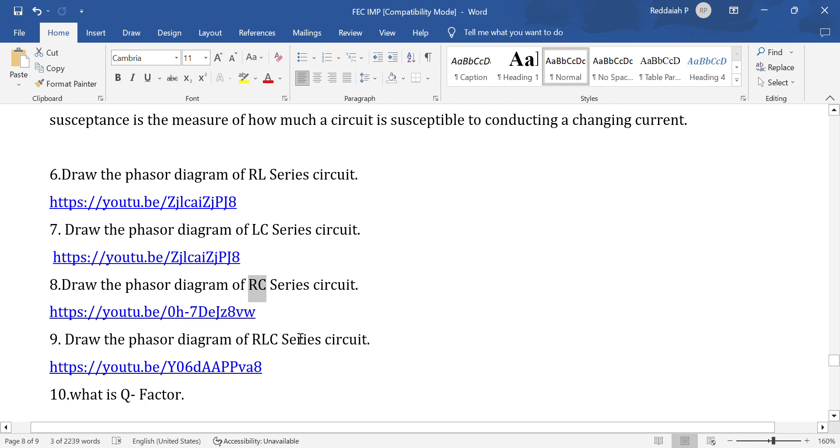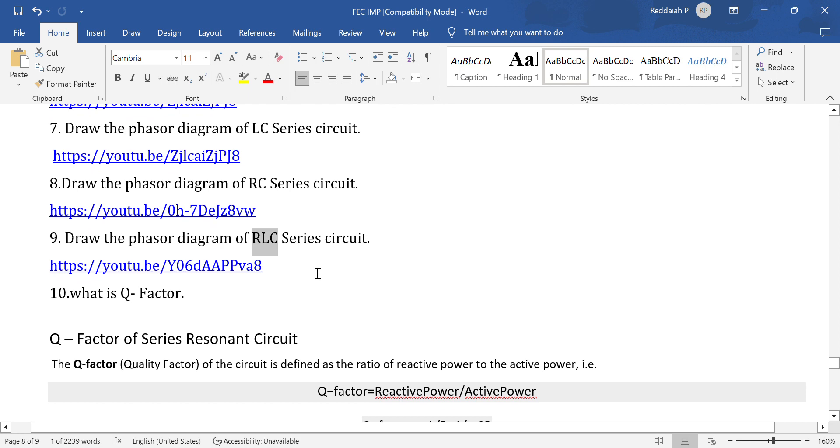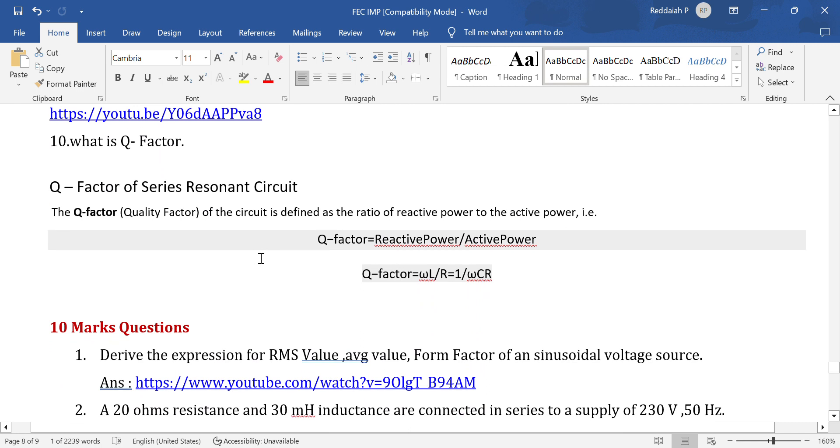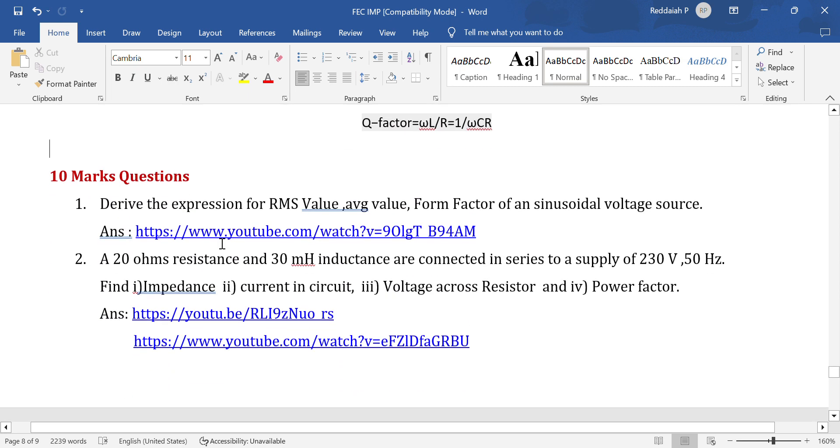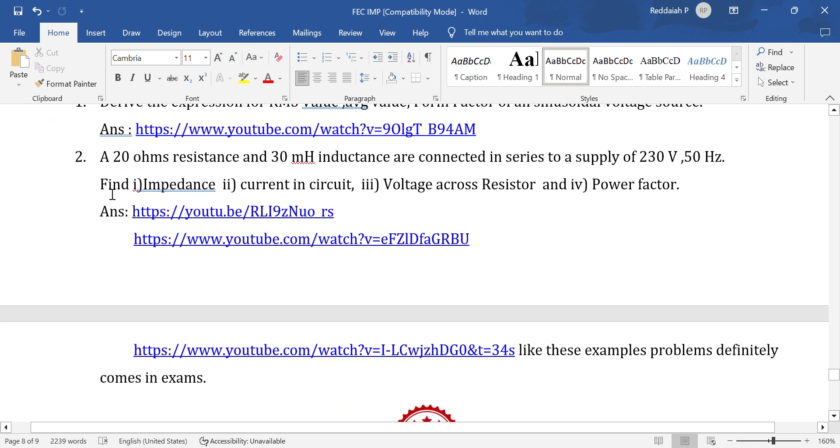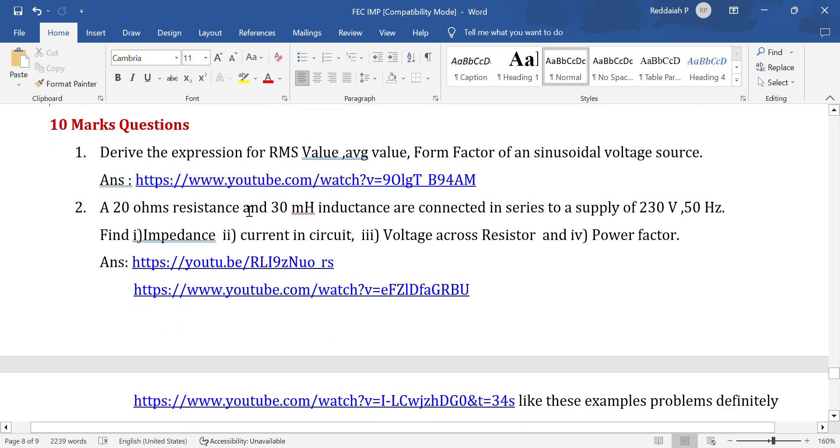What is Q factor? Q factor for a resonance circuit is the ratio of reactive power to active power absorbed by a coil. Q factor equals omega L by R. This is the formula.